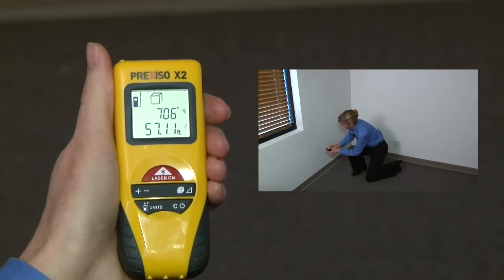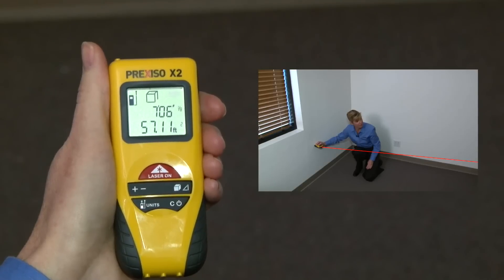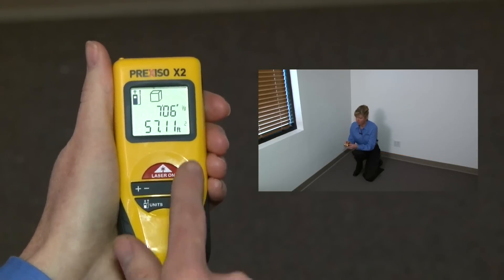Then it will prompt you to make the final third measurement so it can calculate the cubic volume of your room. Line up the device and laser, press and release the laser button.